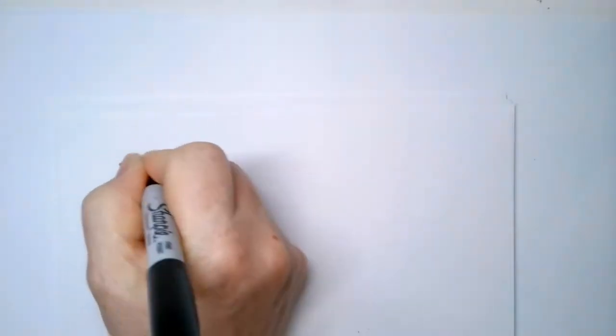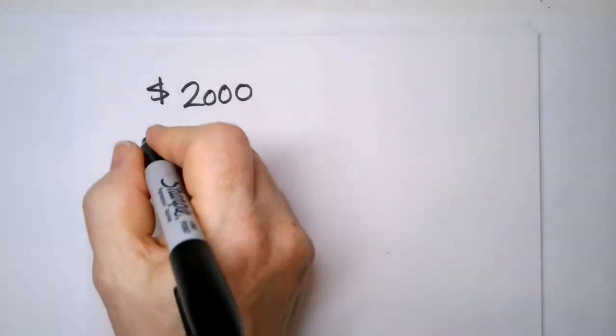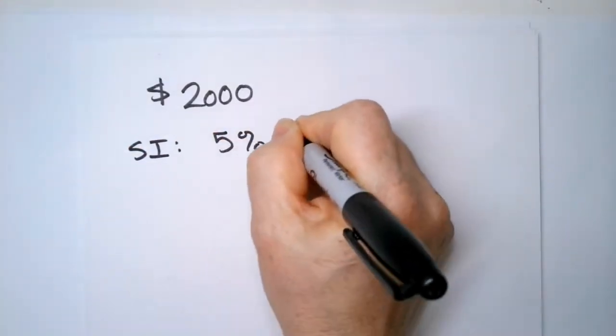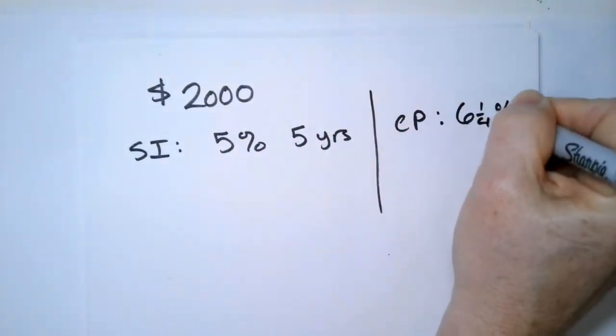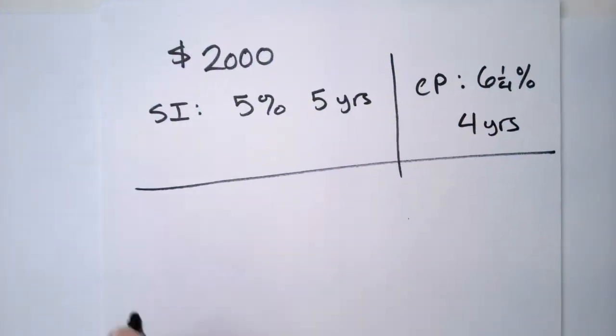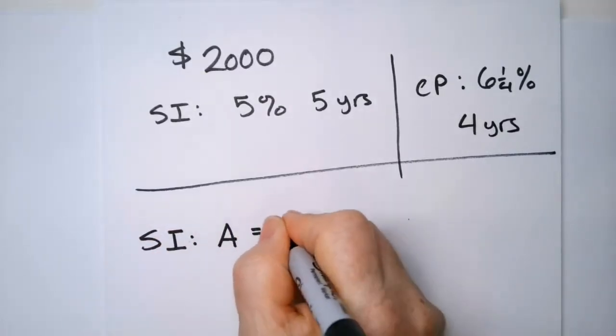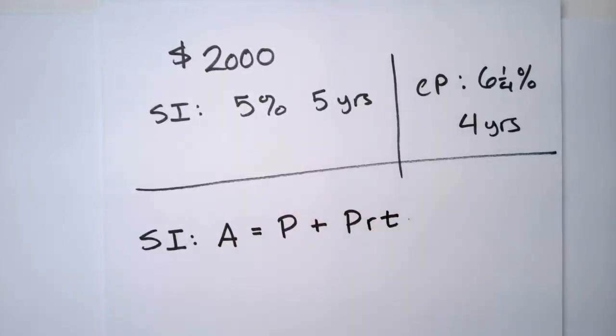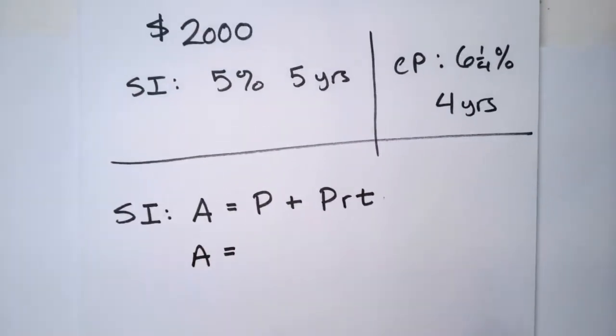Let's do another example because I know this might be new for a lot of you. Say you deposit more money. Suppose you put a $2,000 deposit. And simple interest is 5% for five years. Compound interest account is 6 and a quarter percent for four years. Which one's better? Simple interest first.